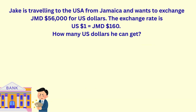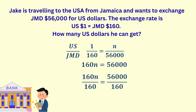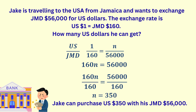Another way to solve the problem is to use proportions by writing the given exchange rate as a ratio expressed as a fraction — U.S. over JMD. So one U.S. dollar to 160 Jamaican dollars equals an unknown amount N of U.S. dollars to 56,000 Jamaican dollars. Cross multiply to solve: 160N equals 56,000. Divide both sides by 160 and we get N equals 350 — the same answer as before.